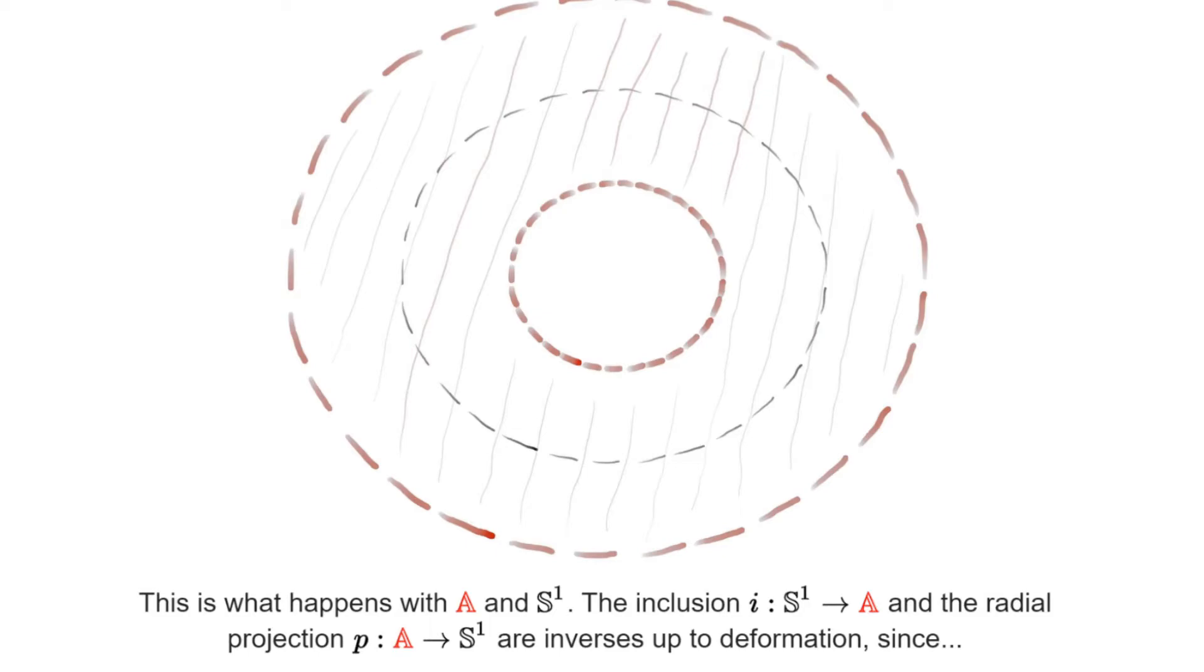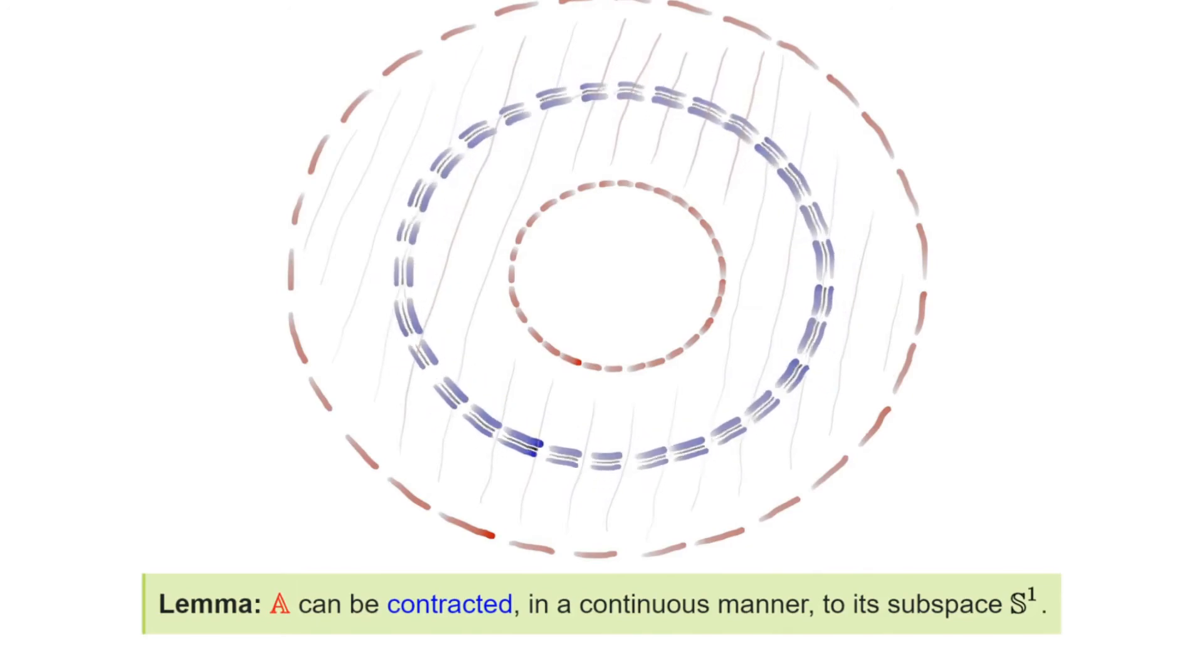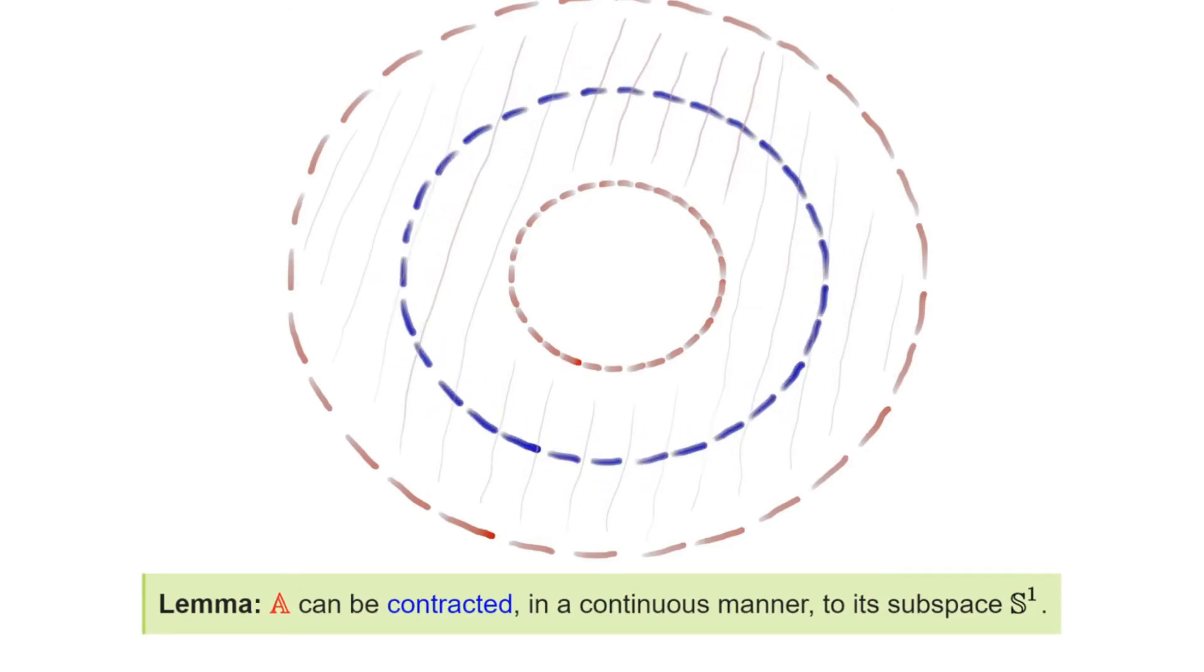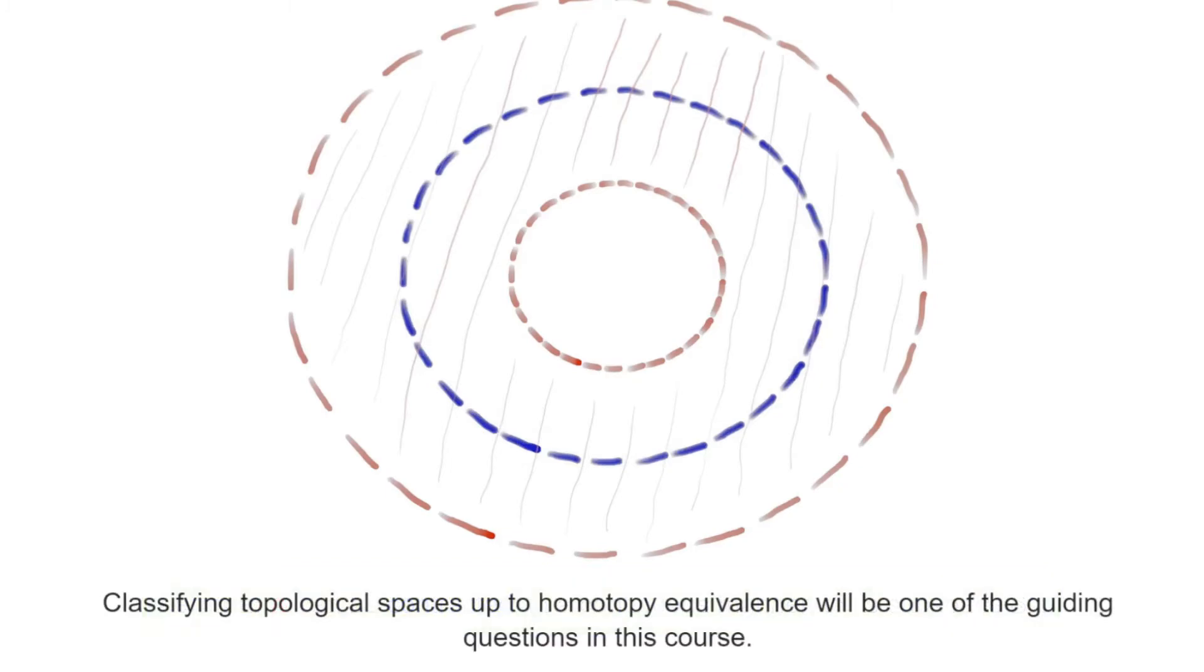This follows from the following animation that shows how A deforms into the circle. During the course, we will not only be interested in whether topological spaces are homeomorphic, but whether they are homotopy equivalent to one another.